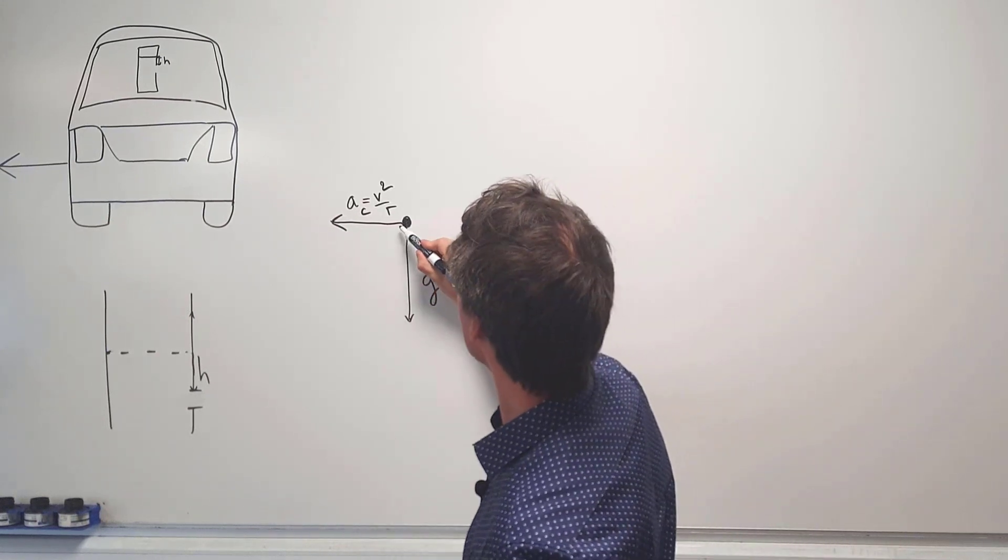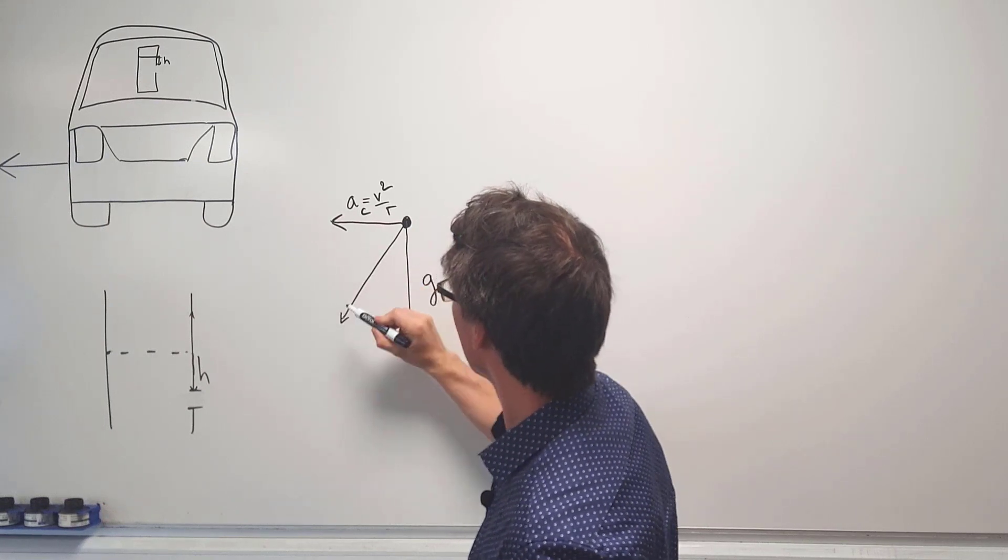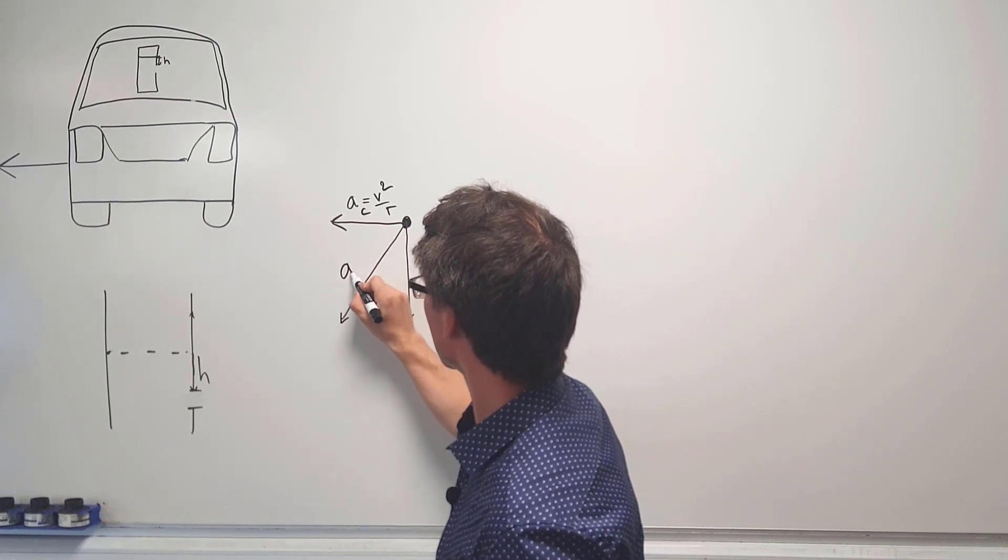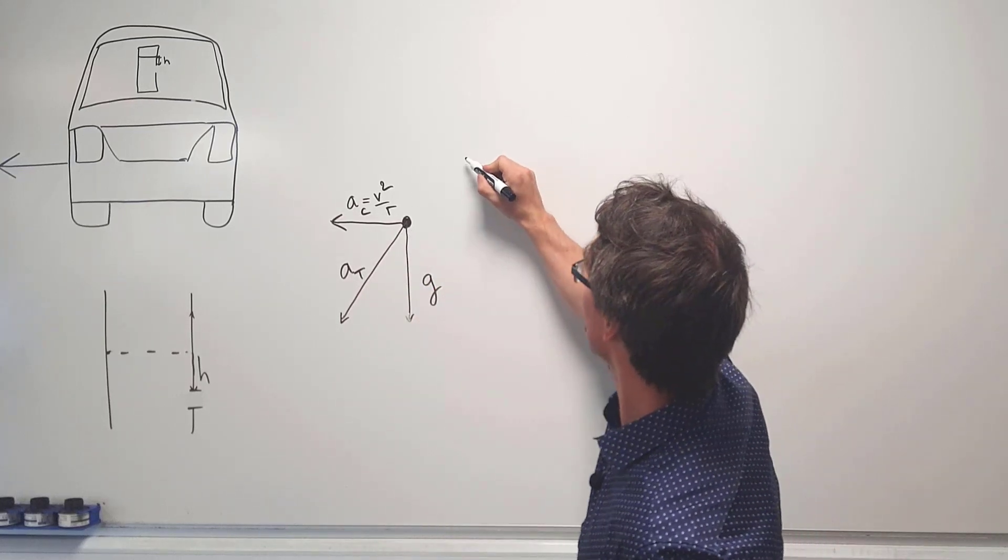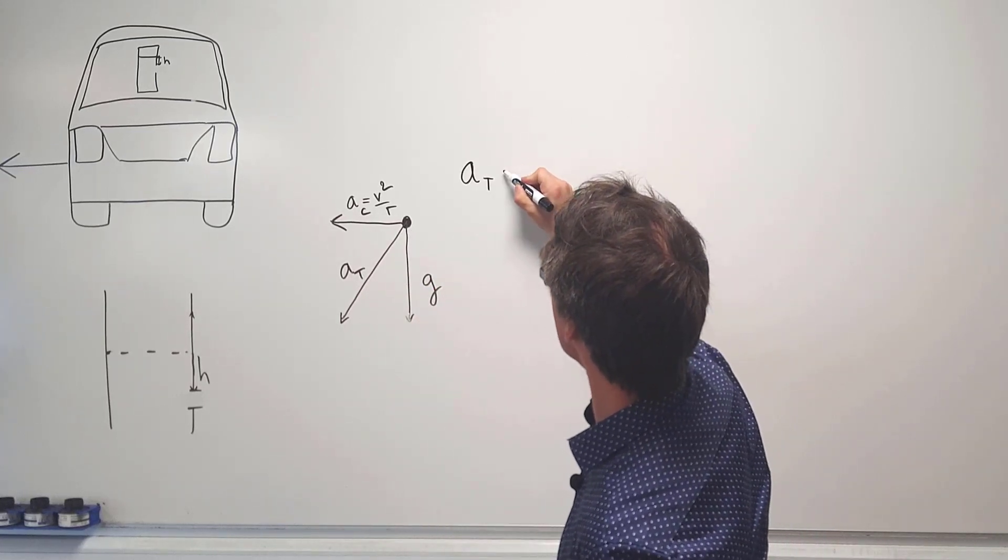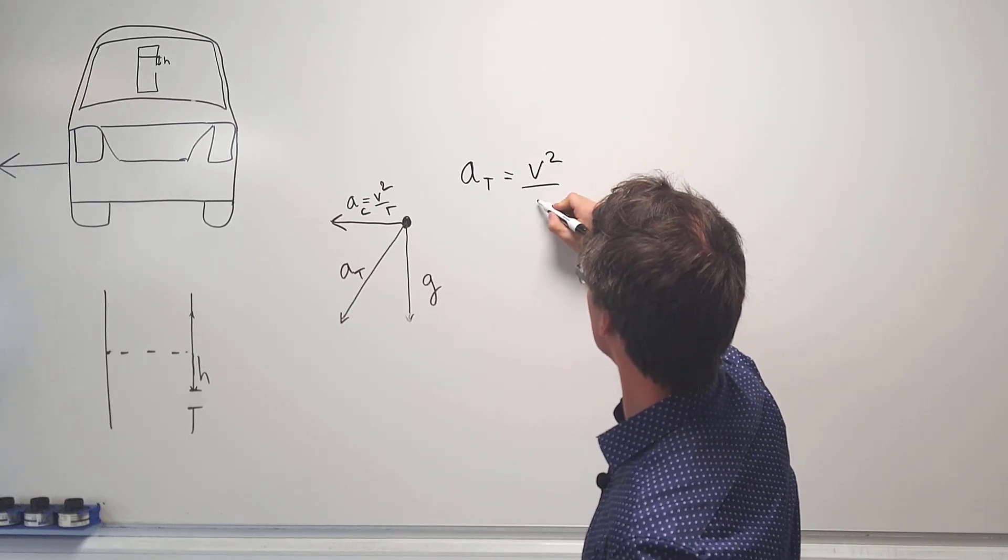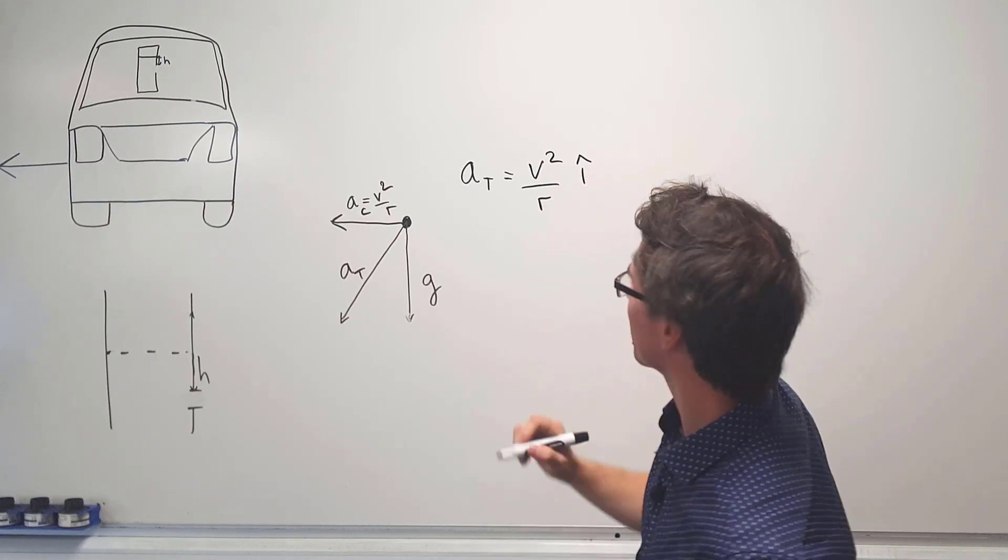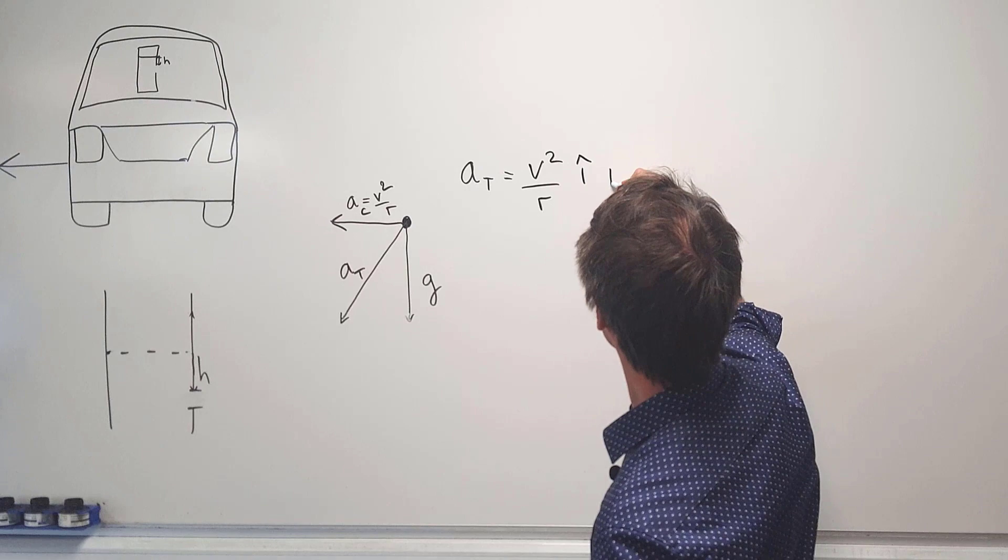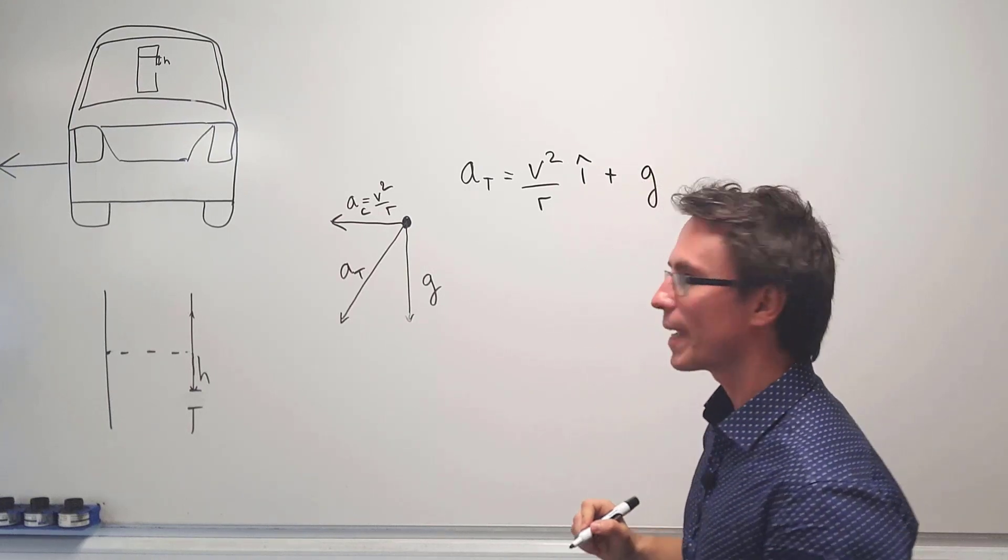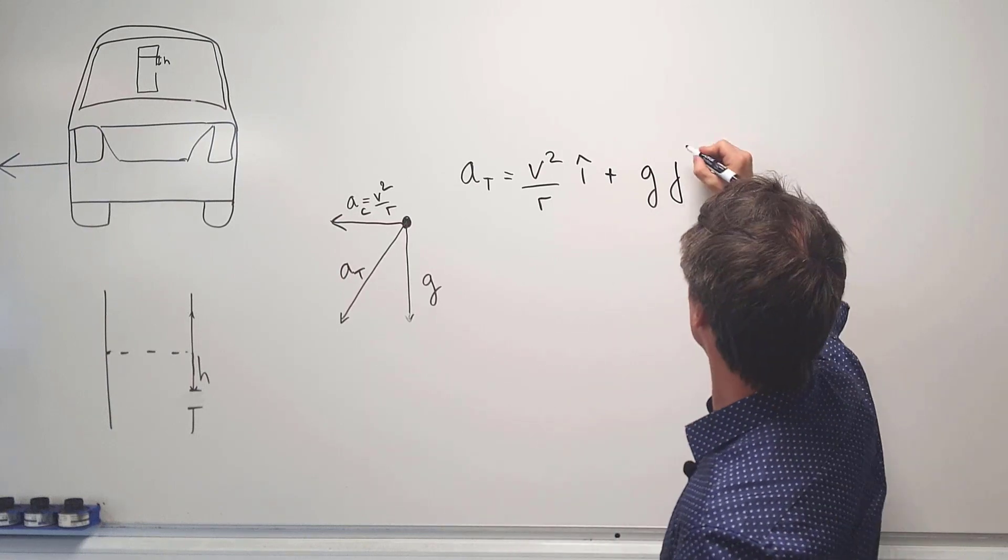The resulting acceleration will be along this diagonal line and shall we just call that A total. Summarized in vector notation, we can write that A total will have two components. We are going to have V squared over R i hat, meaning that that's just in the x direction, plus G in the y direction which we can just call j hat.